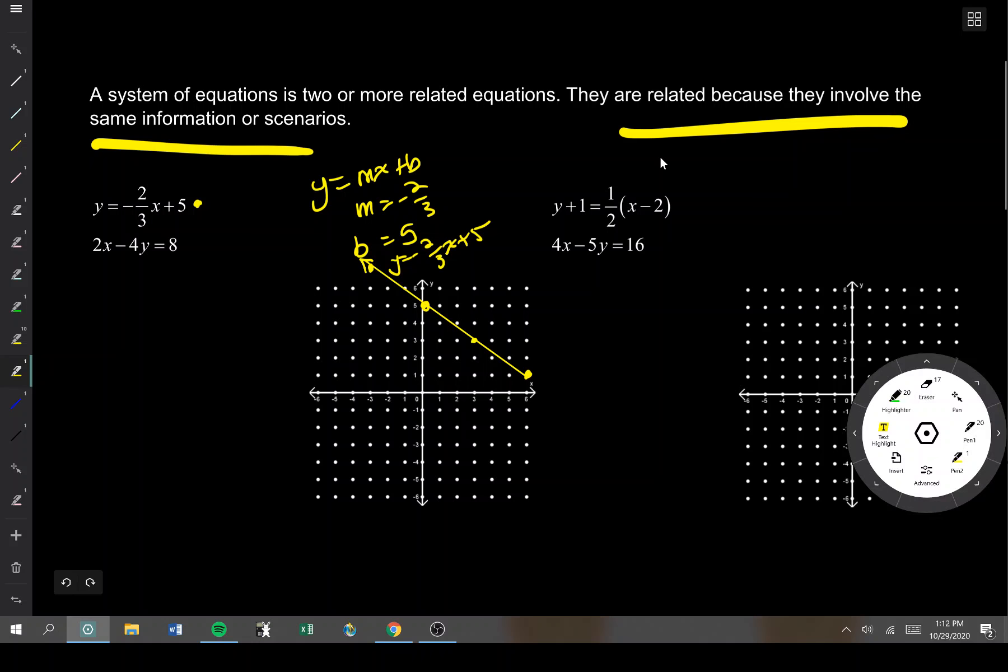The other line I'll do in pink, because pink is like my favorite color at this exact moment. This is in standard form. Standard form is ax plus by equals c. Right now my a value is 2, my b value is negative 4, and my c value is 8.